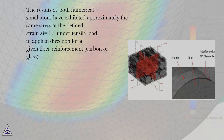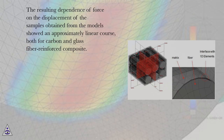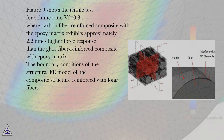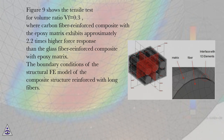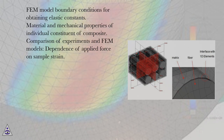The results of both numerical simulations exhibited approximately the same stress at the defined strain epsilon i equals 1% under tensile load for a given fiber reinforcement, whether carbon or glass. The resulting dependence of force on displacement showed an approximately linear course for both carbon and glass fiber reinforced composites. Figure 9 shows the tensile test for volume ratio VF equals 0.3, where the carbon fiber reinforced composite with epoxy matrix exhibits approximately 2.2 times higher force response than the glass fiber reinforced composite with epoxy matrix.